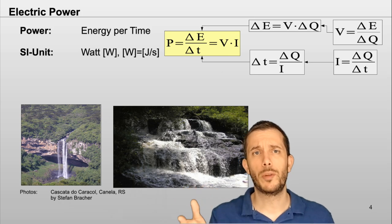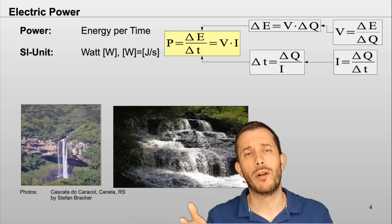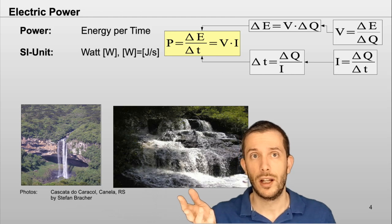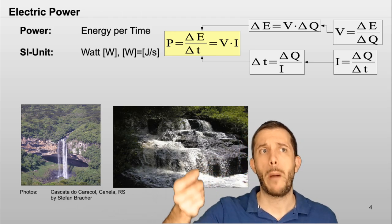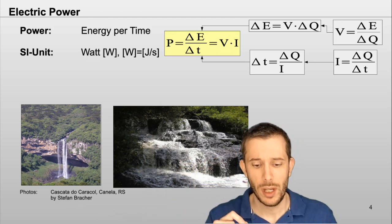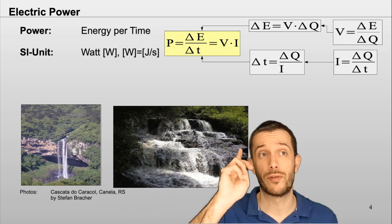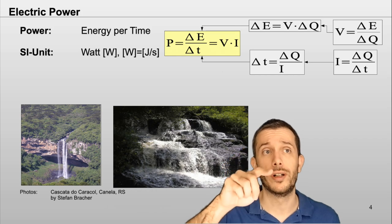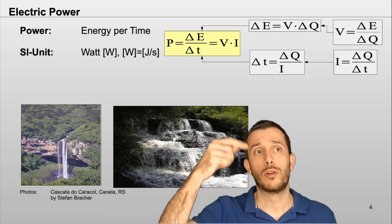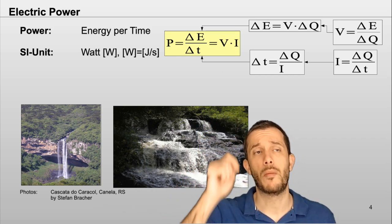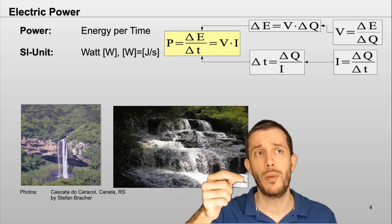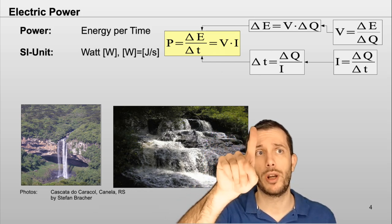Now let's go to power. You already know power from mechanics as the change of energy per time. And now what we can do is we can take our equations from the current being coulomb per second, how much charge per time, solve this one for time and put it at the bottom.